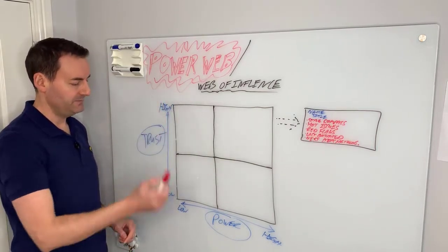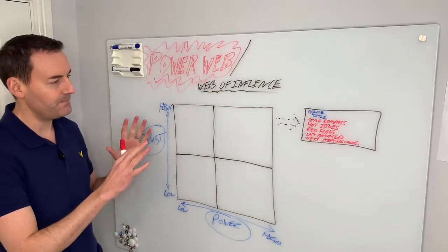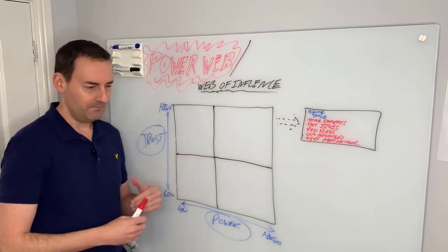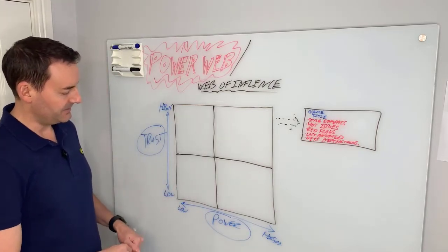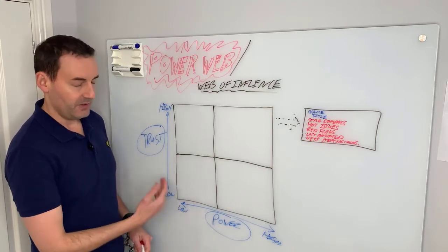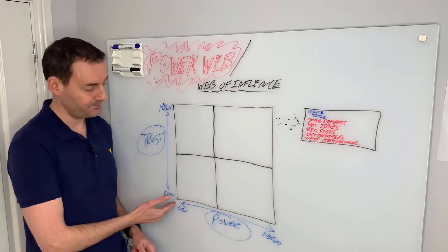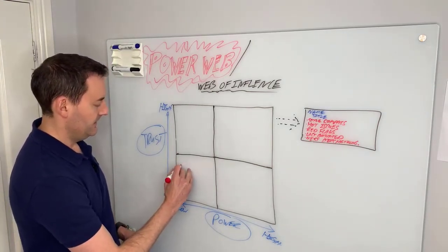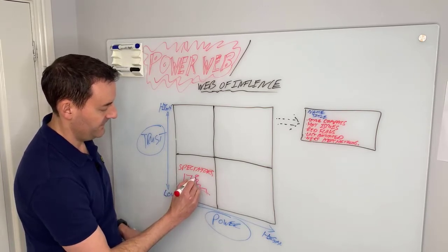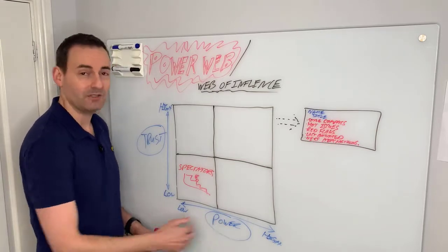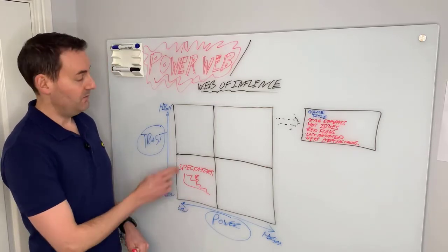Now with the power web, on the x-axis we have power and on the y-axis we have trust. You look at everybody in your organization — say you're starting a new role, it normally takes six months to figure out who people are. This is a way to map them and speed that journey up. So if people have low power and also low trust in the organization, they are what is called spectators — sitting in the stands with no power and nobody trusts them to do anything.